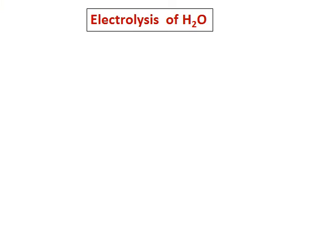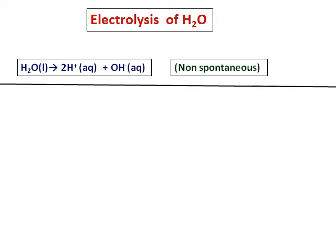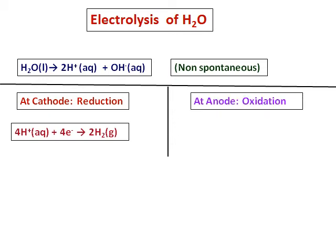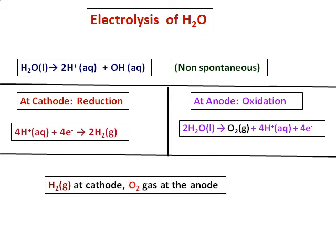Let's do the electrolysis of water. Water ionizes into hydrogen ions and hydroxide ions, and this is a non-spontaneous reaction. As usual, oxidation takes place at the anode and reduction takes place at the cathode. At the cathode, hydrogen ions move towards it, get reduced, and form hydrogen gas. At the anode, what actually happens is the oxidation of water, giving oxygen gas — even if you write the reaction with hydroxide ion, you still get oxygen gas. Therefore, electrolysis of water gives hydrogen at the cathode and oxygen at the anode.